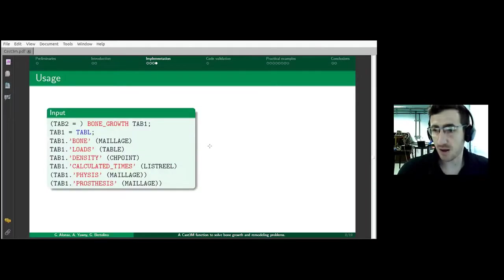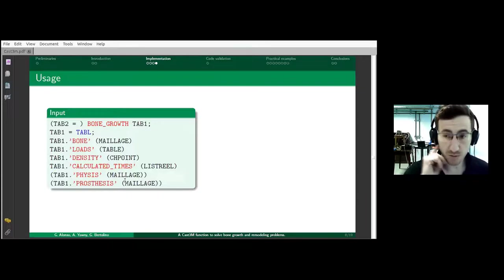A bit of the implementation in CAST3M: we have a function that receives a table in which we incorporate all the problem data. For example, we have a mesh representing the bone, we have to define a table with the loading conditions, define the initial conditions like the initial density distribution, give a list of times for which we want to compute growth, and many other variables. This is documented.